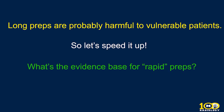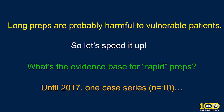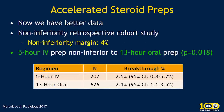Long preps are probably harmful to vulnerable patients, so we can speed things up with a rapid prep. Until 2017, there was only a single case series without a control group with 10 subjects. Now we have better data: a non-inferiority retrospective cohort study with a 4% non-inferiority margin tested a 5-hour IV prep versus a 13-hour oral prep and found them non-inferior. Breakthrough reaction rate was 2.5% for the 5-hour IV prep and 2.1% for the 13-hour oral prep — an effective substitute in high-risk patients.